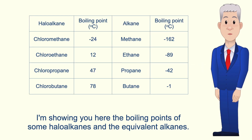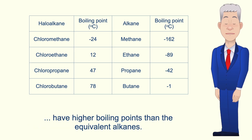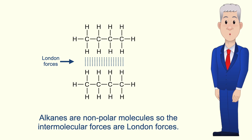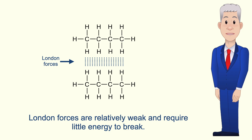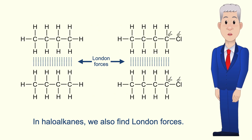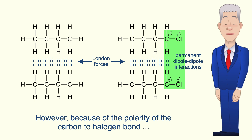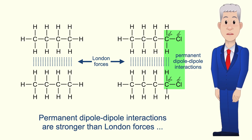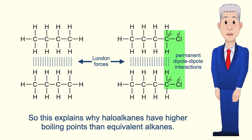Here are the boiling points of some haloalkanes and the equivalent alkanes. Haloalkanes have higher boiling points than equivalent alkanes because of the intermolecular forces. Alkanes are non-polar molecules, so their intermolecular forces are London forces, which are relatively weak and require little energy to break. In haloalkanes we also find London forces, but because of the polarity of the carbon-to-halogen bond, we also find permanent dipole-dipole interactions. These are stronger than London forces and require more energy to break, which explains the higher boiling points.